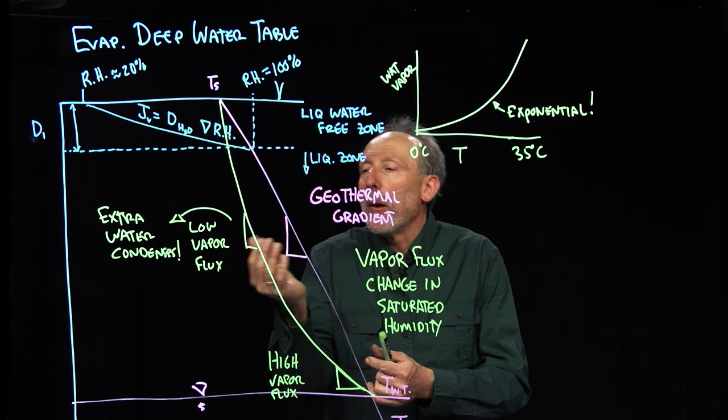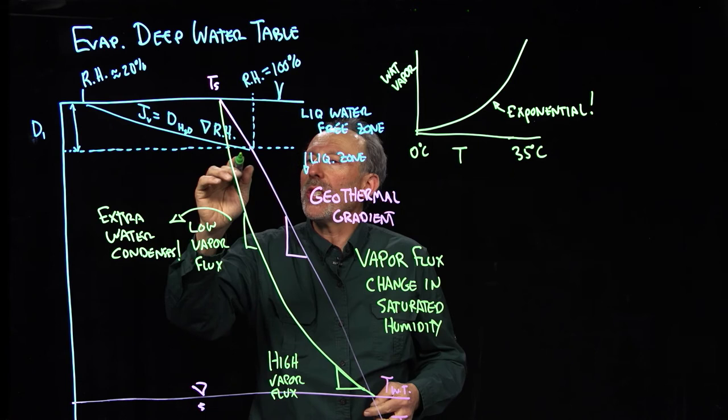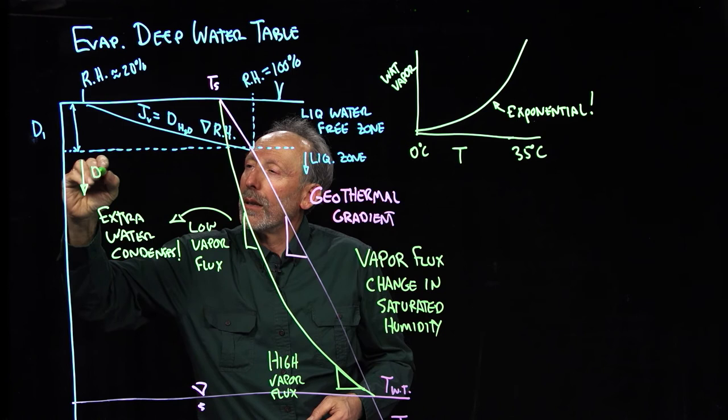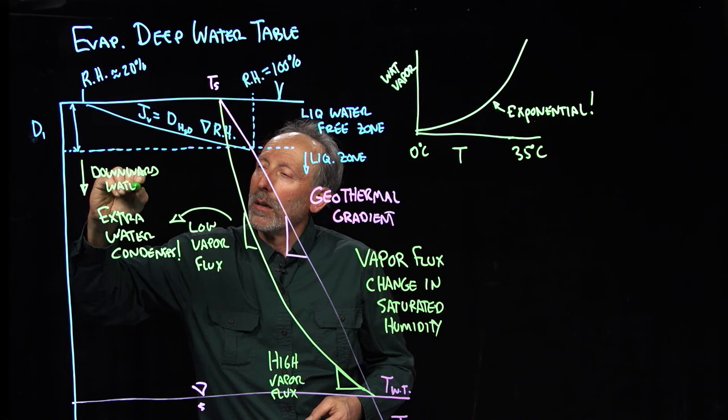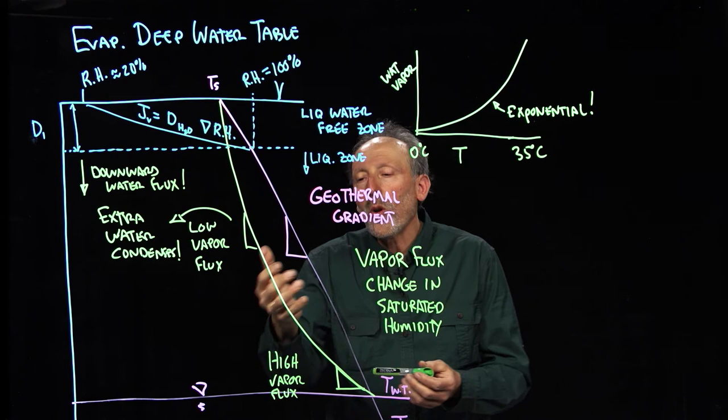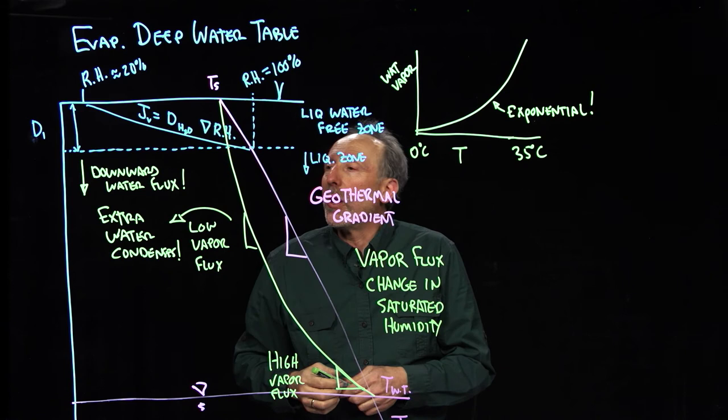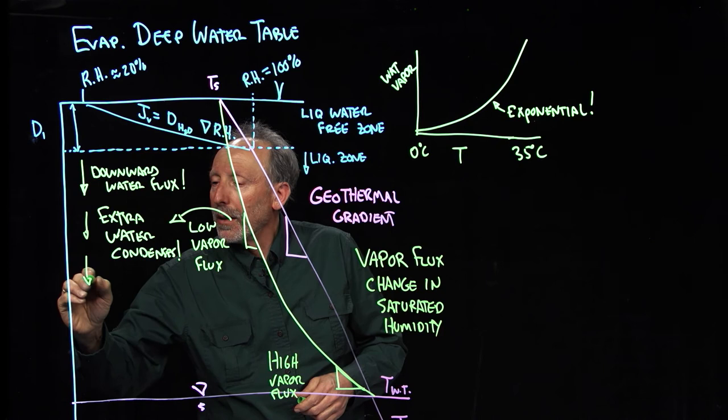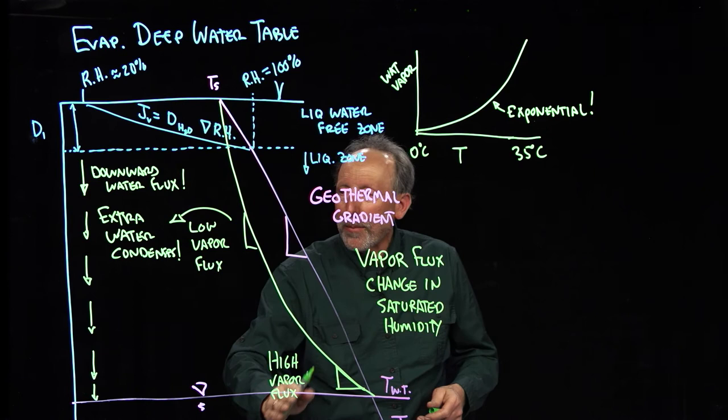Well, this is really interesting. So what we have is water is coming off the water table, going up, but it's condensing as it goes. So in fact, what we're getting in this region is a downward water flux. Because more and more water is condensing as the water vapor comes up. So what we have then is a downward flux here that re-delivers water to the water table. So water vapor goes up and comes down as liquid.